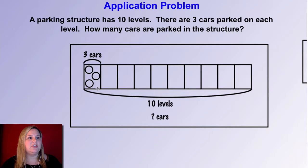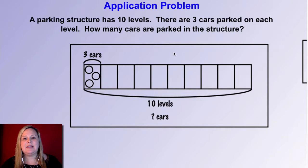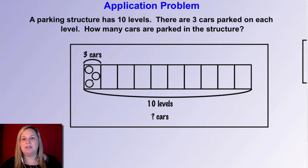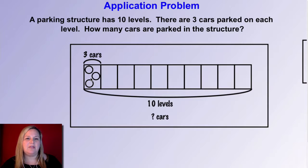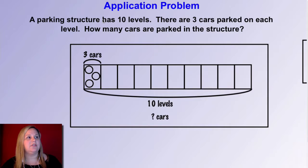There is the tape diagram I would draw. It shows that there are 10 levels — 1, 2, 3, 4, 5, 6, 7, 8, 9, 10 — and there are three cars in each level. If that helps you get started, go ahead and try to solve the rest of this problem: how many cars are parked in the structure?